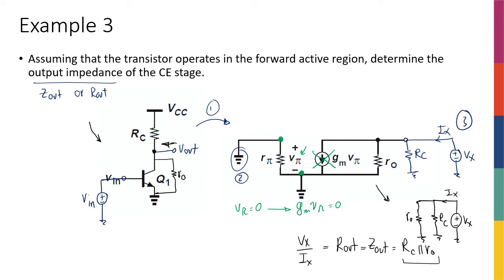Reviewing what we did: first, we drew the small signal model. Second, we noted that the independent sources should be grounded. Third, we added VX and IX. Fourth, we analyzed the circuit. We were lucky because Vπ was zero, therefore gm·Vπ was zero, and we were just left with two resistors. So the output resistance is just the parallel combination of RC and R0.